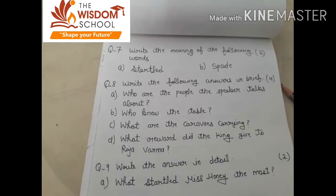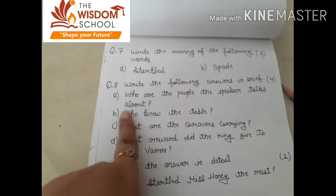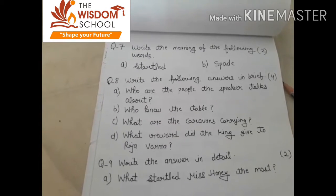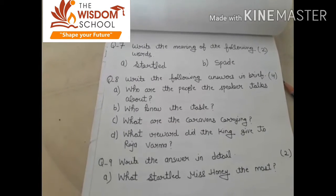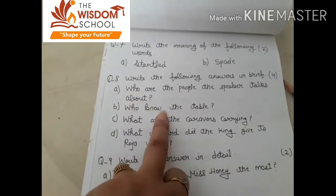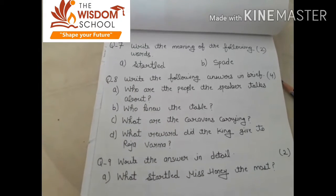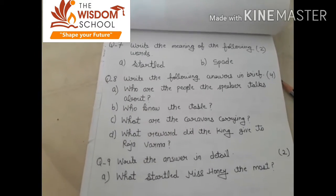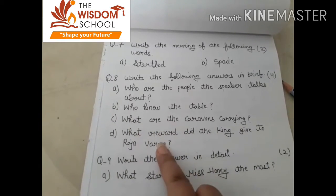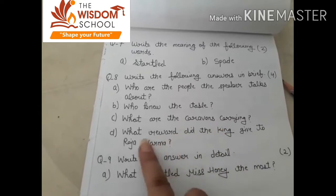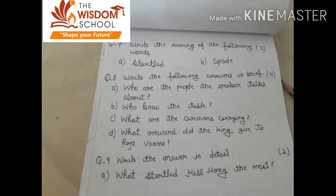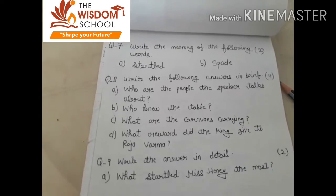Eight. Write the following answers in brief. Who are the people the speaker talks about? Jo people hain, jo speaker hai, woh koon se logon ke baare mein baat kar raha tha? Gardner, hooker, and watchman. Who knew the tables? Matilda knew the tables. What are the caravans carrying? Gold and silk. What reward did the king give to Raja Varma? King ne Raja Varma ko usse apne court mein chief minister ki post de di.